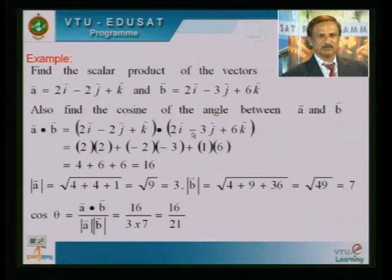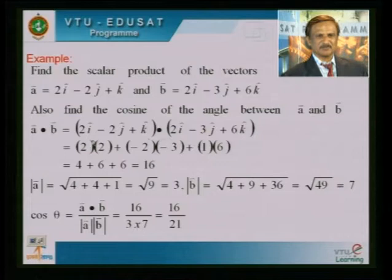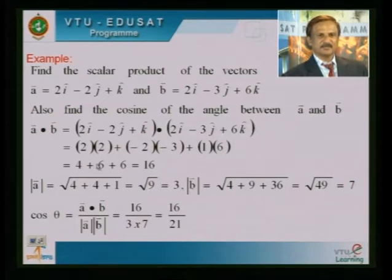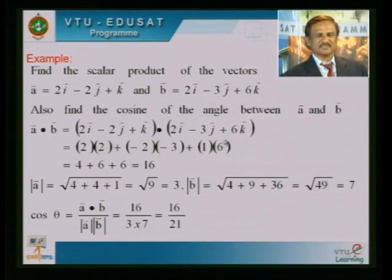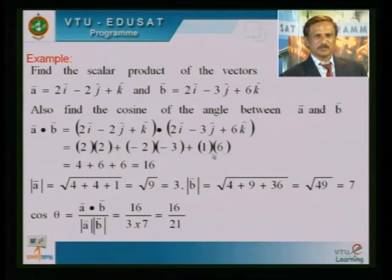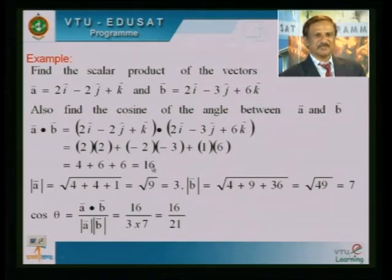You can multiply 2i into all the terms, similarly minus 2j into all the terms, k into all the terms. You want to write i·i, j·j, k·k, i·j, j·k, k·i. Except i·i, j·j, k·k, other dot products become 0. So: 2×2 = 4, (−2)×(−3) = 6, 1×6 = 6. So 4 + 6 + 6 = 16. Therefore a·b = 16, a scalar quantity. Suppose they may ask you to calculate the modulus of a. Given a = 2i − 2j + k, modulus of a = √(2² + (−2)² + 1²) = √(4+4+1) = √9 = 3.